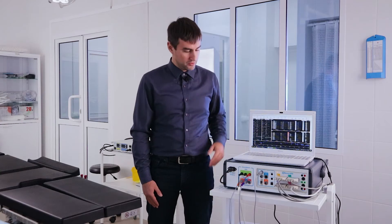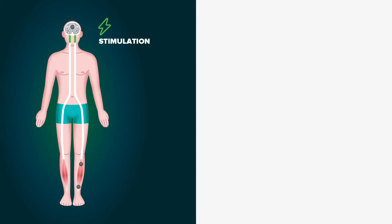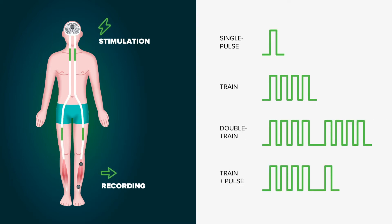A few words about the built-in transcranial electrical stimulator. It is intended for stimulation of motor cortex to record motor evoked potential from different muscles. The stimulator ensures single pulse and train stimulation, including double train and train plus pulse stimulation.